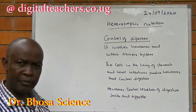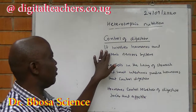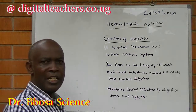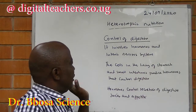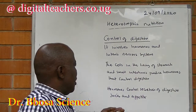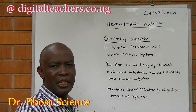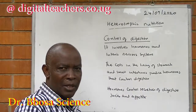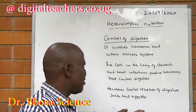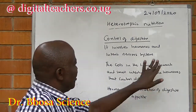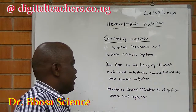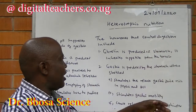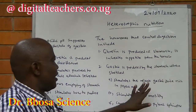Control of digestion is a complex process involving hormones and the enteric nervous system. Cells in the lining of the stomach and small intestine produce hormones that control digestion. Hormones control the secretion of digestive juice and appetite. The feeling of hunger can be initiated by sight, smell, or actual hunger. Hormones include ghrelin, produced in the stomach, which works in the brain and increases appetite.